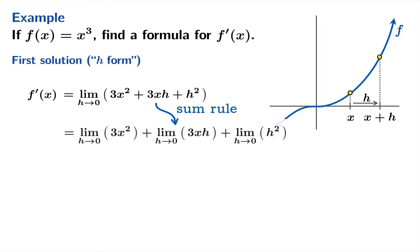Now we have a sum rule for limits so we could break this apart into the limit of these three expressions and we'll notice that x has been anchored for this calculation. x is constant for the purpose of evaluating this limit. It's h that's moving.